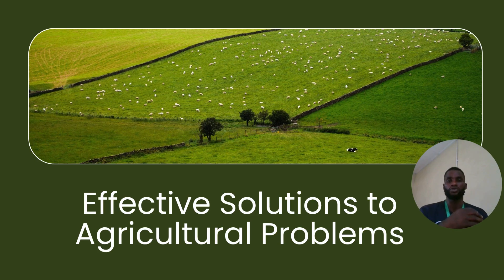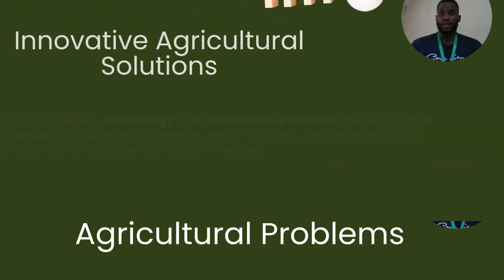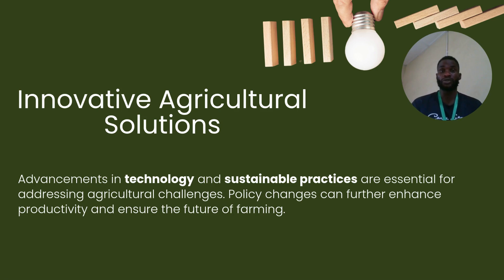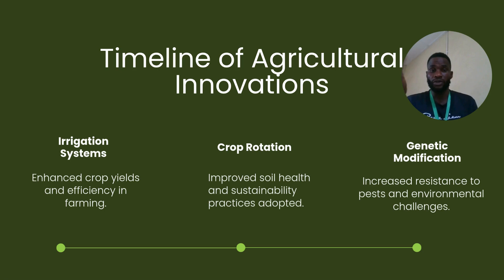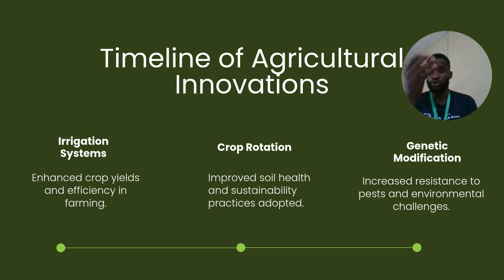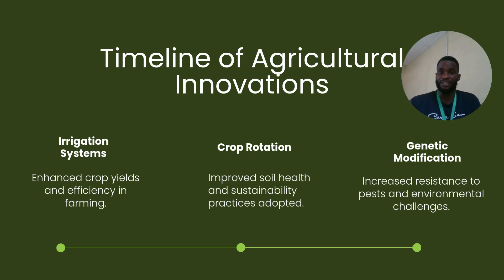Despite the many problems affecting agriculture in West Africa, we have some effective solutions. Number one, we have innovative agricultural solutions. Advancements in technology and sustainable practices are essential for addressing agricultural challenges. Policy changes can further enhance productivity and ensure the future of farming. Innovations include improved irrigation systems to enhance crop yields, crop rotation to improve soil fertility, and genetic modification to increase resistance to pests and diseases.